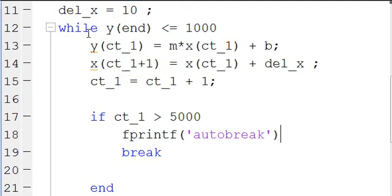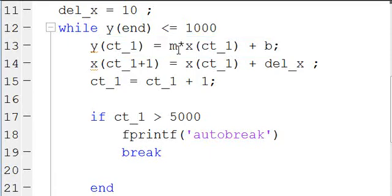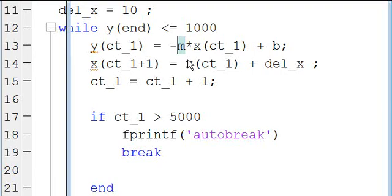So if you run this while y(end) is less than or equal to 1000, maybe your y equation is always going to be less than 1000. Like if this was negative m, it would continuously be going down and would never get to a solution.